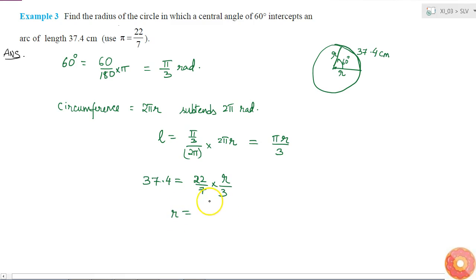7 by 22 into 37.4... 37.4 is divisible by 11, this is 3.4 into 11, and this is 2 into 11. I can further simplify it. This is equal to 1.7 times 2, so r is equal to 7 times 3 times 1.7, which is 21 times 1.7. What will that be? It will be 35.7 centimeters.